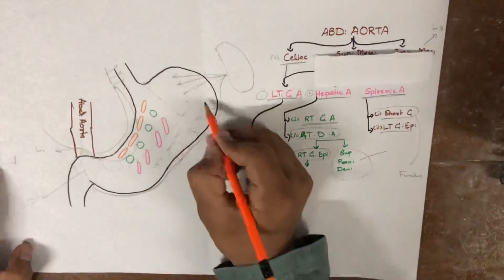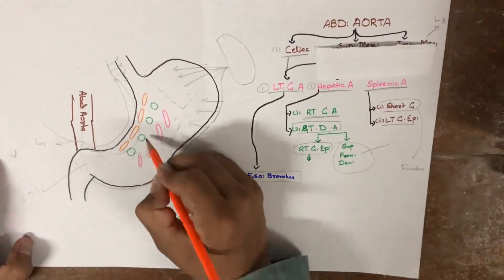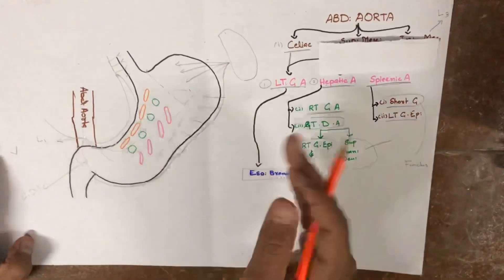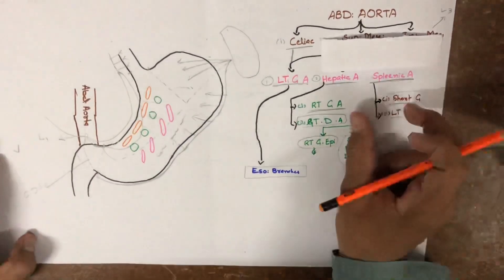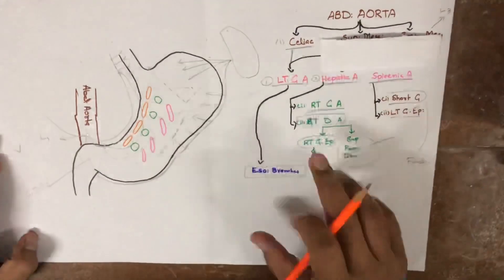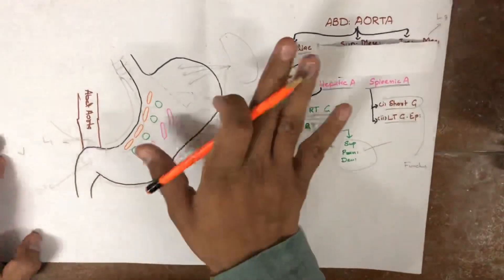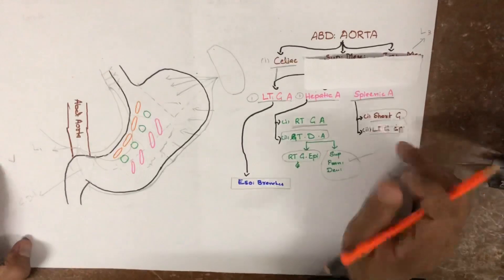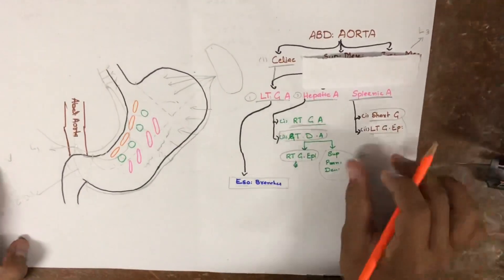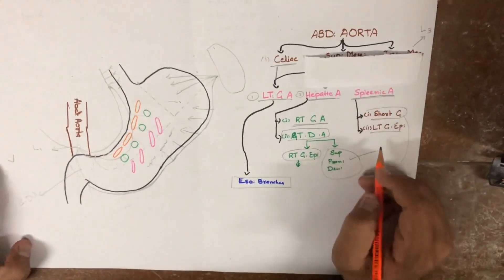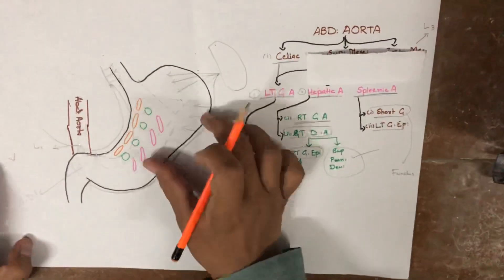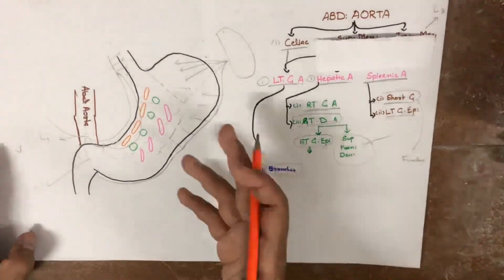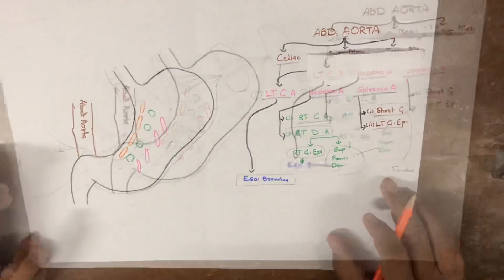All these arteries anastomose anteriorly and posteriorly with each other. Remember that the splenic artery does not directly supply the stomach — it goes behind the stomach and gives branches: the short gastric arteries and the left gastroepiploic arteries, and these arteries supply the stomach. This is all about the arterial supply of the stomach.